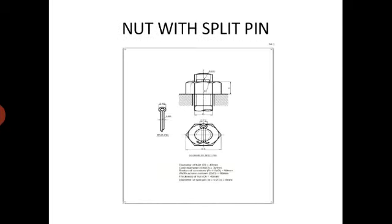Now we will draw the next diagram: nut with split pin. I will explain how we can draw an ordinary hexagonal nut with split pin. First of all, take suitable dimensions. D, core diameter, D is equal to 25 mm. The thickness of nut is D — it is not 0.25D, it is taken as D. Take 0.25D as the dimension of the slot.